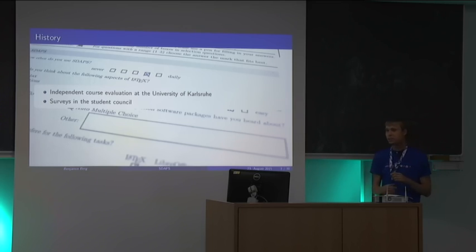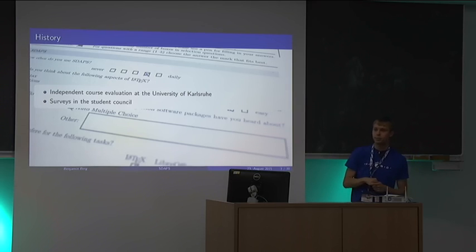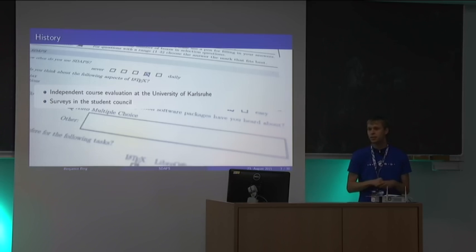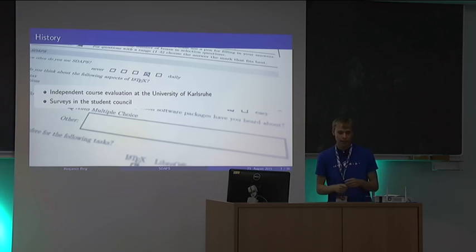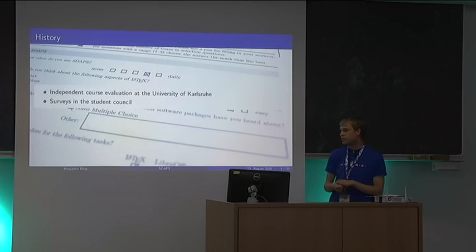We started the project back in 2008 at the University of Karlsruhe — today the Karlsruhe Institute of Technology. It was decided that course evaluation would be centralized, and we weren't happy with the bylaws in place at the time, so the Faculty of Electrical Engineering decided to boycott the university evaluation. At the same time, the change to the bachelor-master system was happening in Germany, and we really needed to use the data ourselves, especially for first-semester bachelor students.